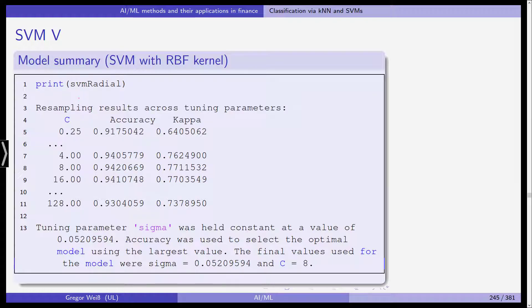Again, you get the resampling results from cross validation and you see the tuning parameter sigma was held constant at a value of 0.05. Accuracy was again used to select the optimal model and the final values were sigma equal to 0.05 and C equal to 8.